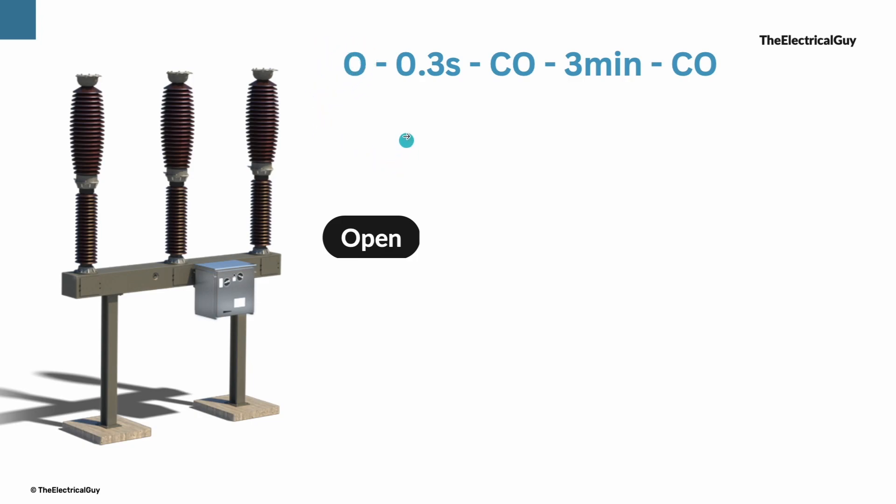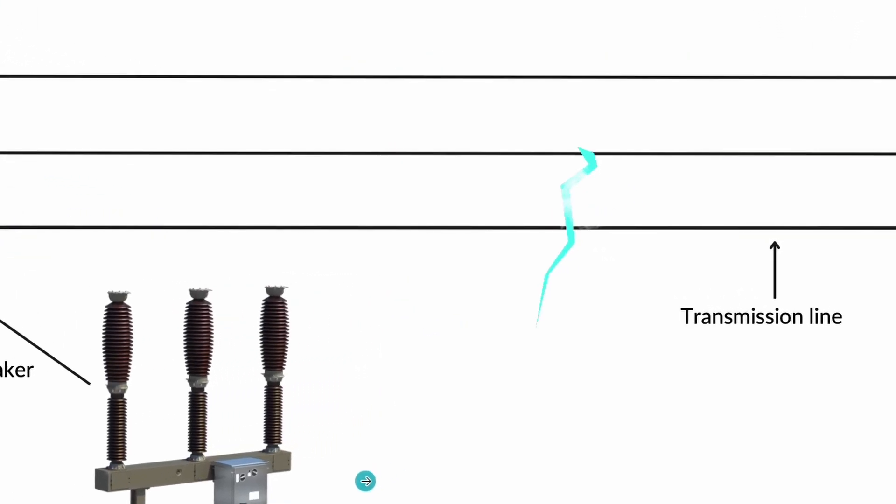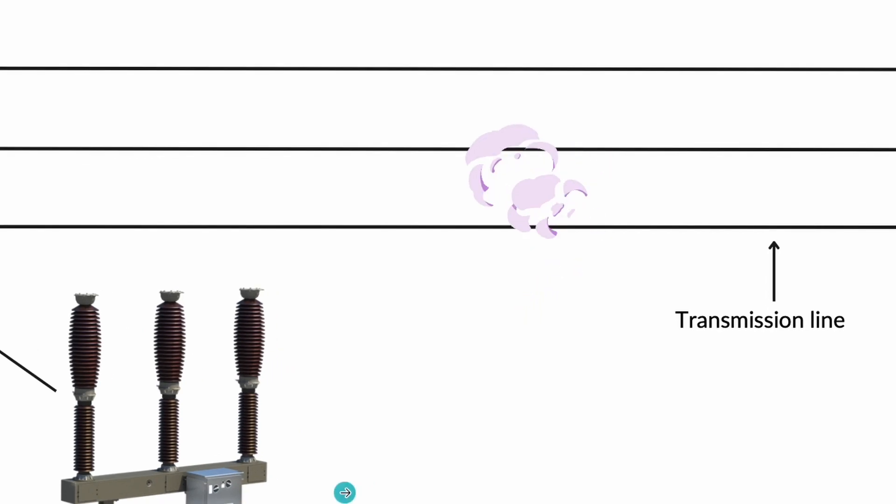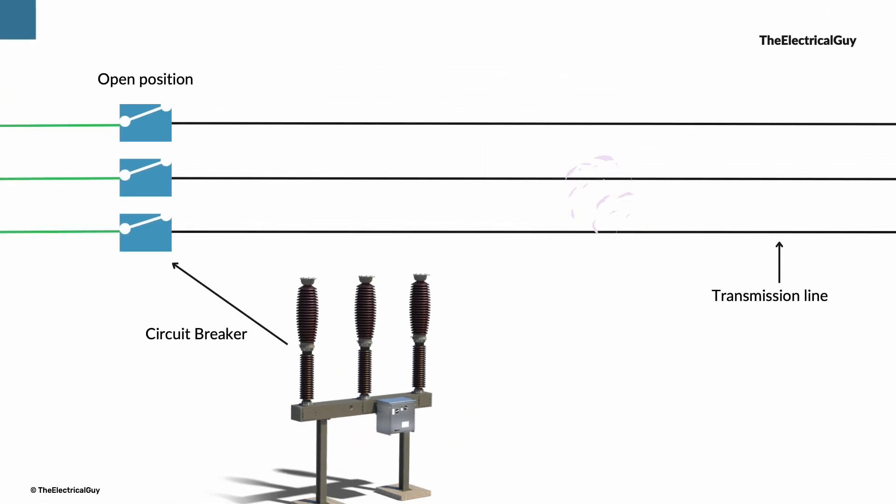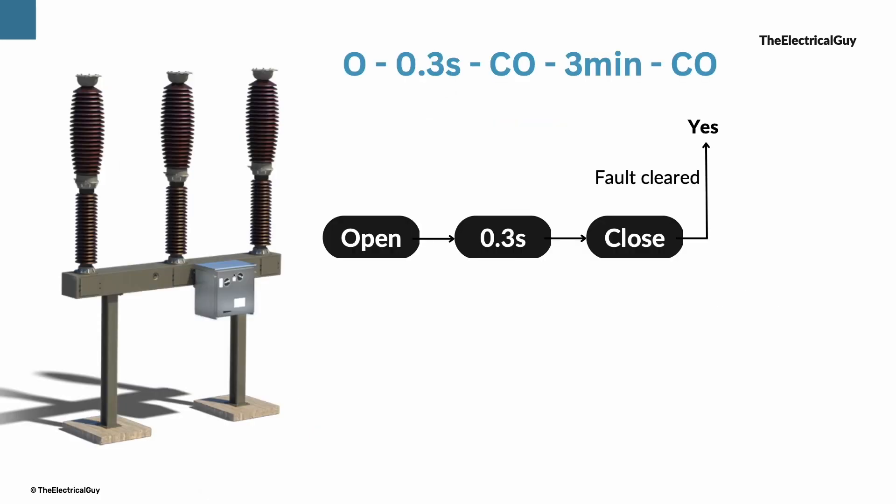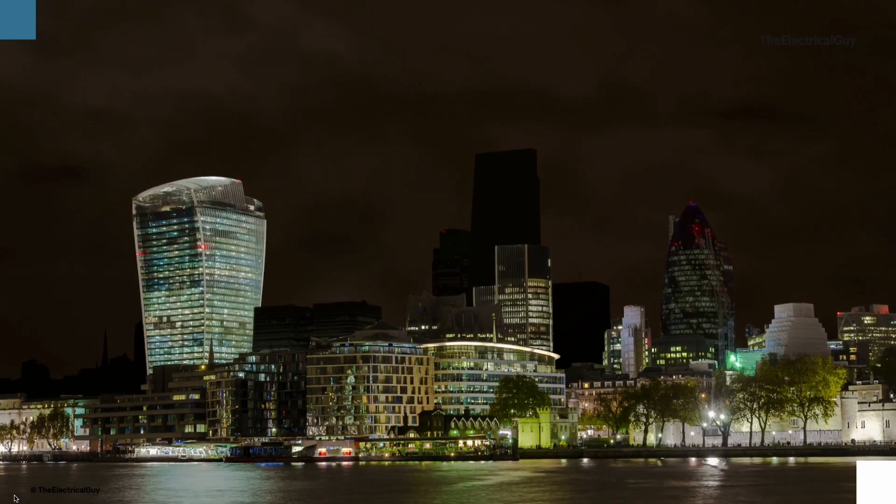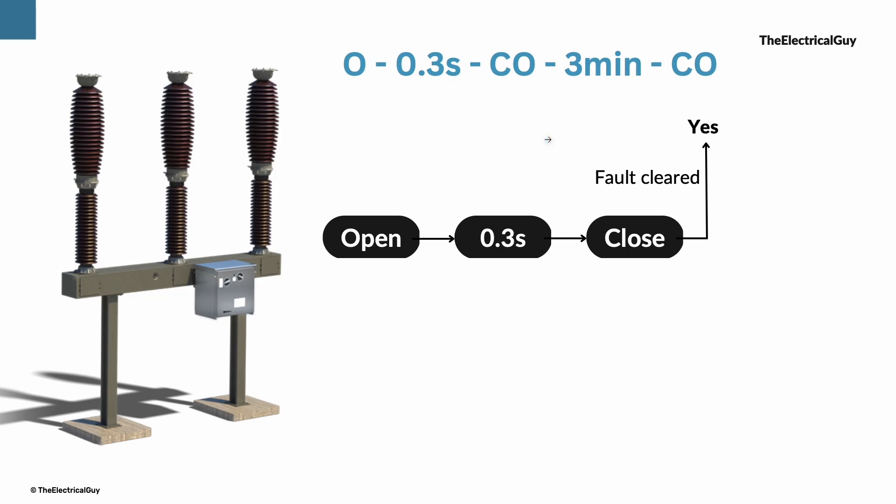And after a delay of 0.3 seconds, the circuit breaker will receive a command to close. Now 0.3 second delay is given so that the arc caused by the transient fault would go away and air will have its dielectric strength back. So if the fault is clear, the breaker will remain in the closed condition and the system is back in normal operation without any human intervention.